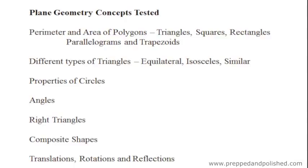Properties of circles, such as how to find the circumference and area. Angles and their rules, such as a straight line has 180 degrees. Right triangles and the rules of right triangles.